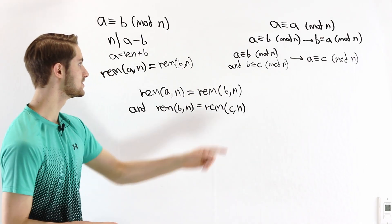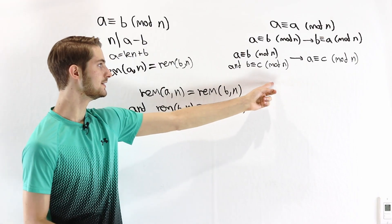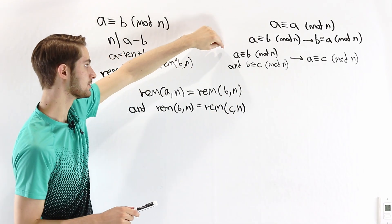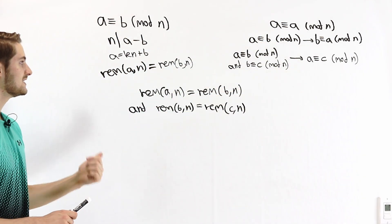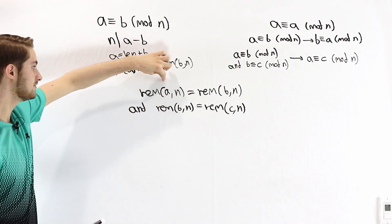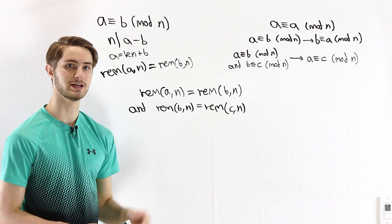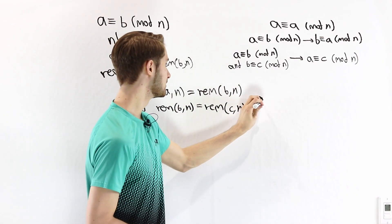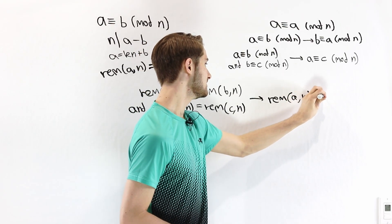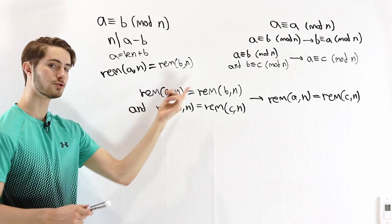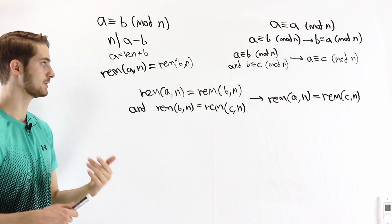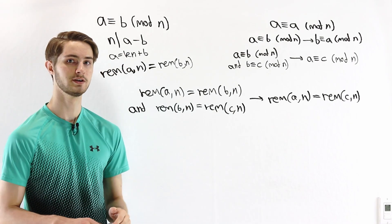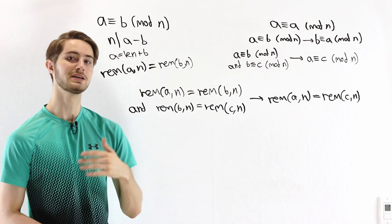The third property is transitivity: if A is congruent to B mod N and B is congruent to C mod N, then A is congruent to C mod N. By definition, the remainder of A equals the remainder of B, and the remainder of B equals the remainder of C. Since ordinary equality is transitive, the remainder of A equals the remainder of C, so A is congruent to C mod N. Therefore congruence mod N is an equivalence relation and behaves the way we expect equality to behave.